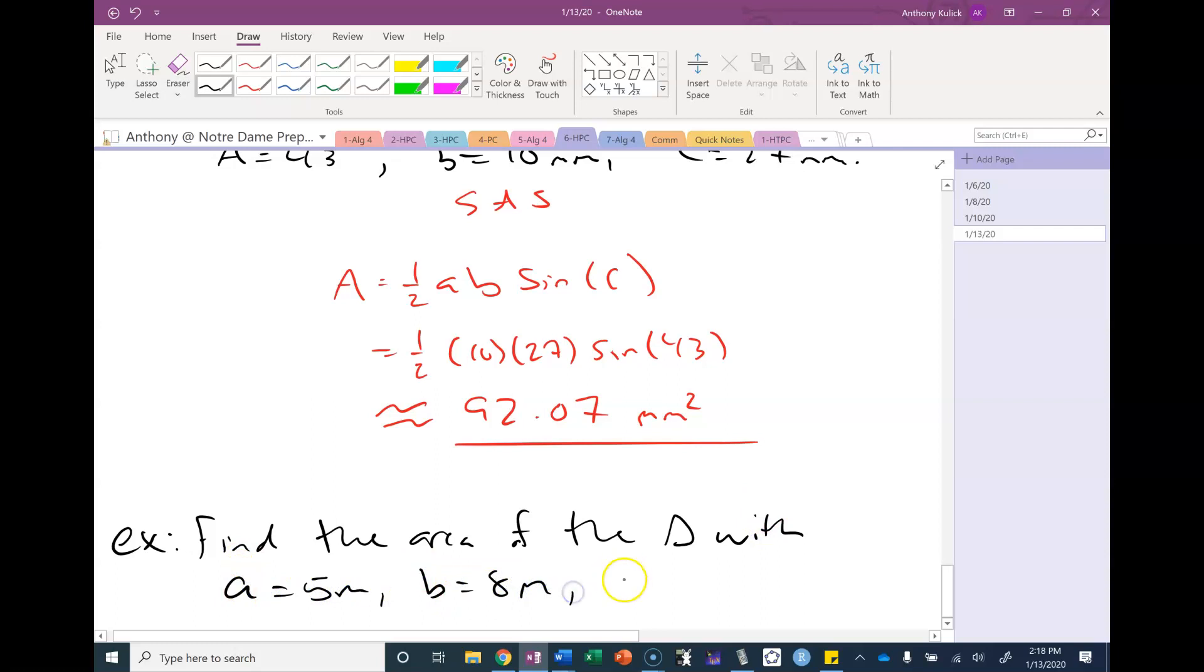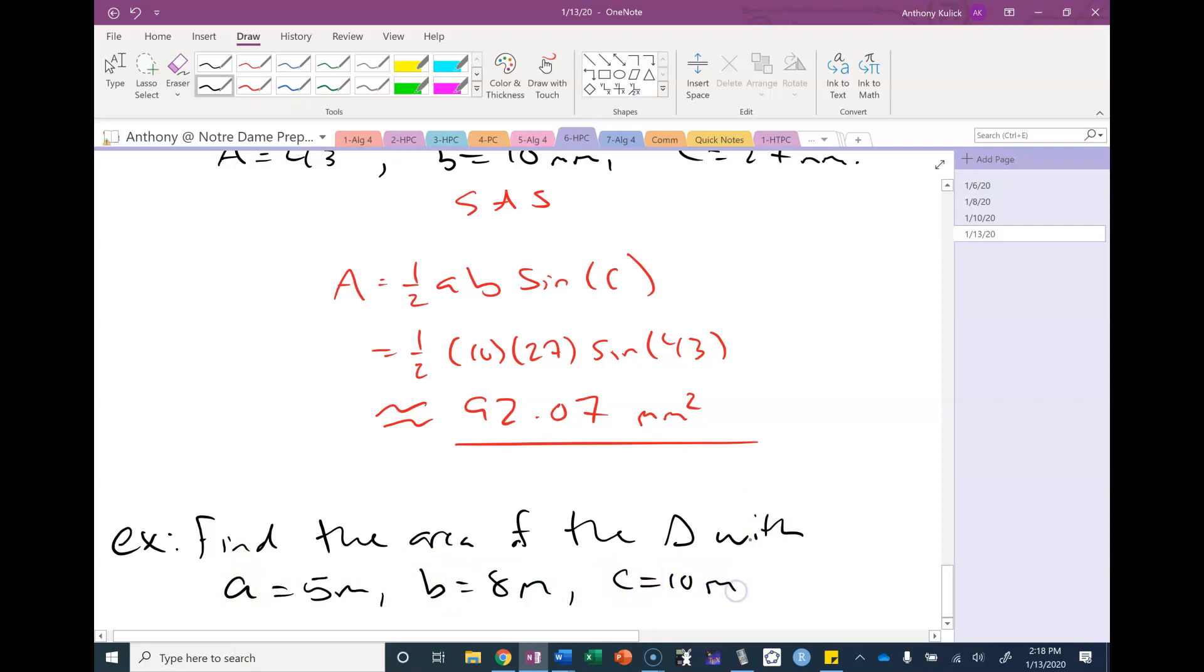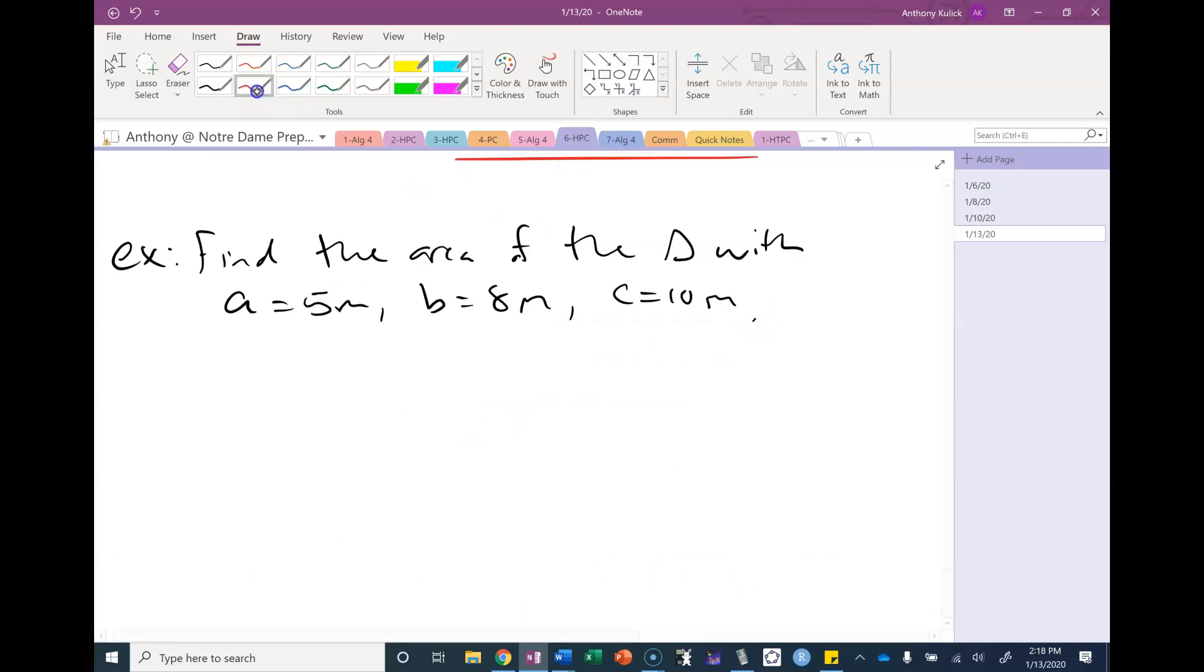Next up we're going to find the area of the triangle with sides 5 meters, 8 meters and 10 meters. What situation is this? This is side side side situation. First thing you should do whenever you get a side side side situation is check to make sure the triangle is possible. So 5 plus 8 is greater than 10, what's that mean? It's okay. The sum of the legs should be greater than the hypotenuse. All right so that's good we have a triangle that's possible. Since I have three sides what should I use? Heron's formula.